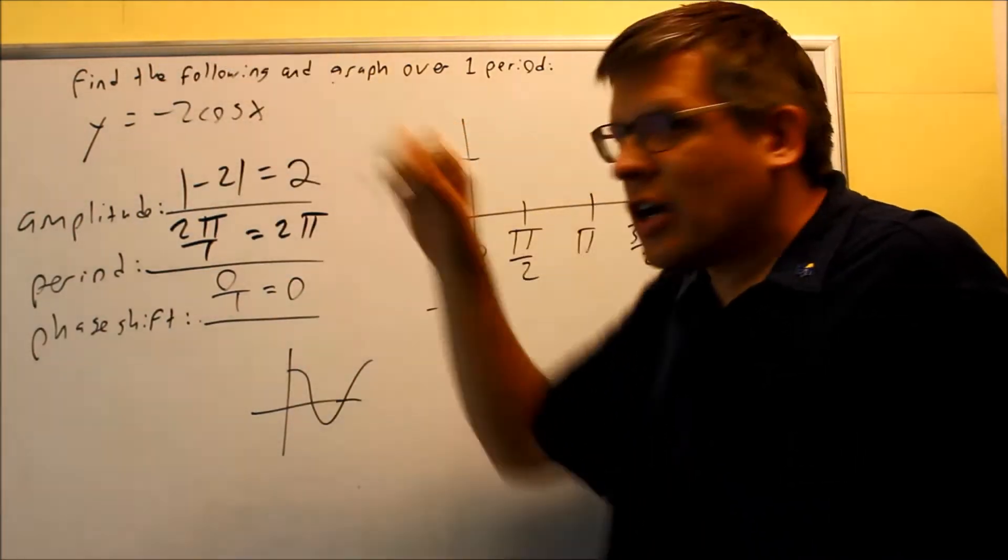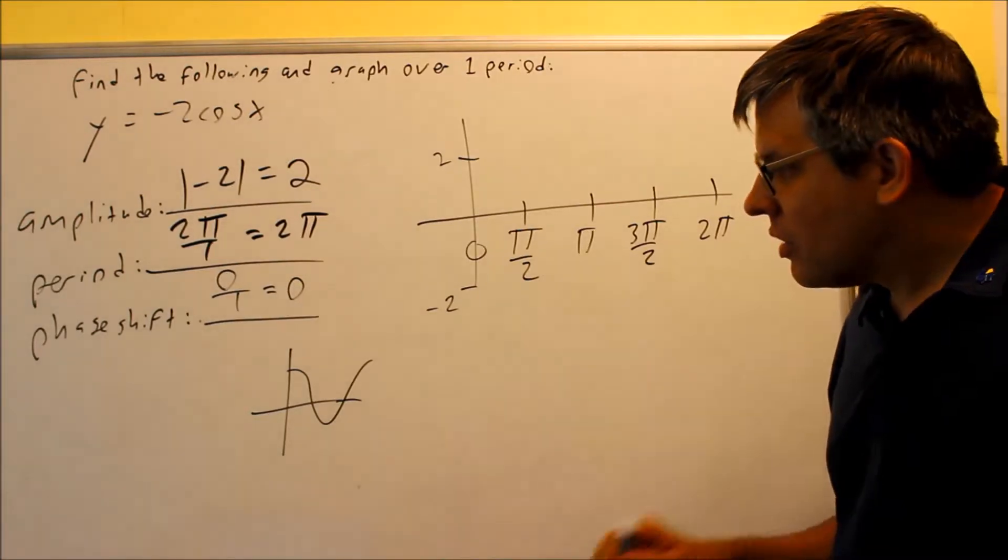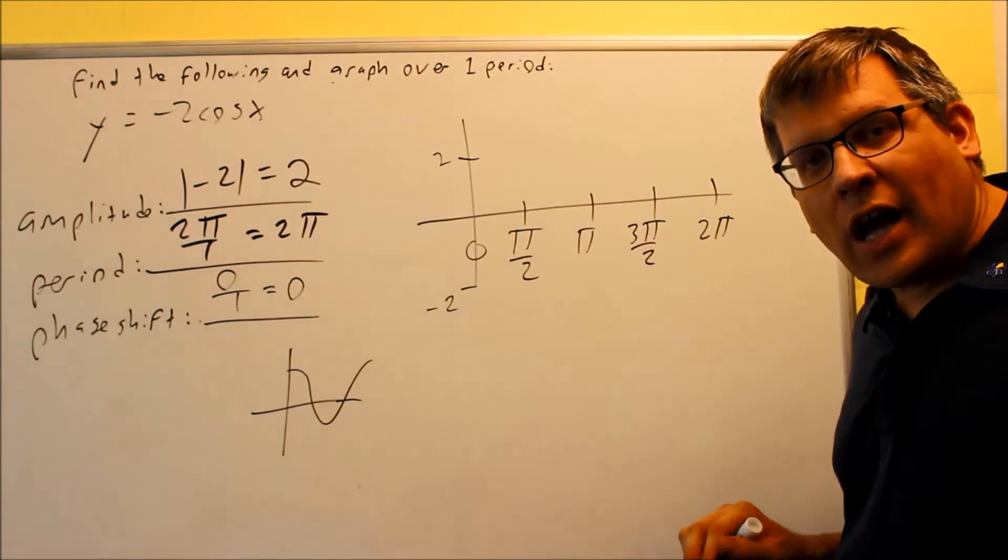Because I have a negative sign in front, referring back to the transformations that you might have had in precalculus, what you would do is you would take this graph and you would flip it over the horizontal axis.